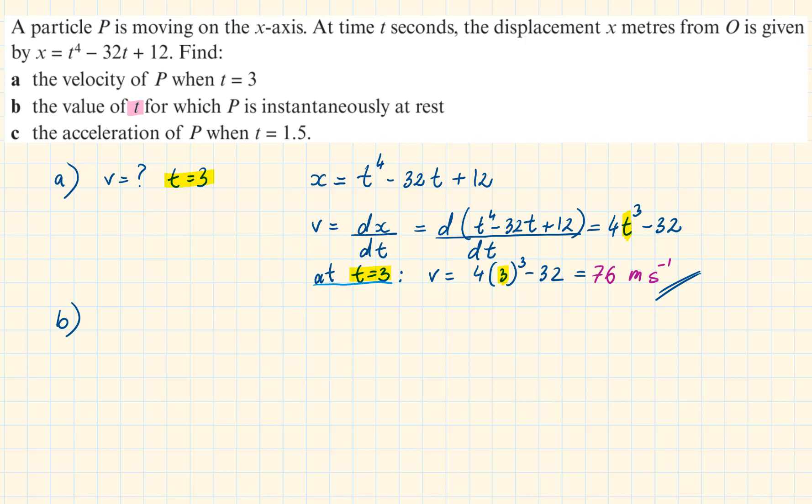Part b: the value of time for which P is instantaneously at rest. The keyword here is instantaneously at rest, so v is equal to 0.